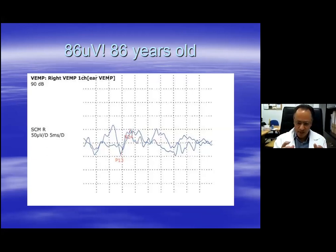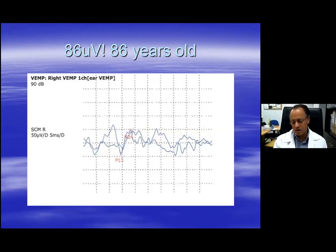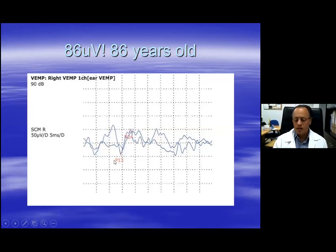You can monitor the EMG and obtain a ratio between the EMG and the C-VEMP, so you can get an adequate value that can be reported as a parameter with regards to amplitude, but with minimum contraction. You do not need a minimum level of contraction as demanded by most dedicated systems. This patient here, 86 years old, with a sensitivity of 50 microvolts per division — this patient gave me a C-VEMP of 86 microvolts.